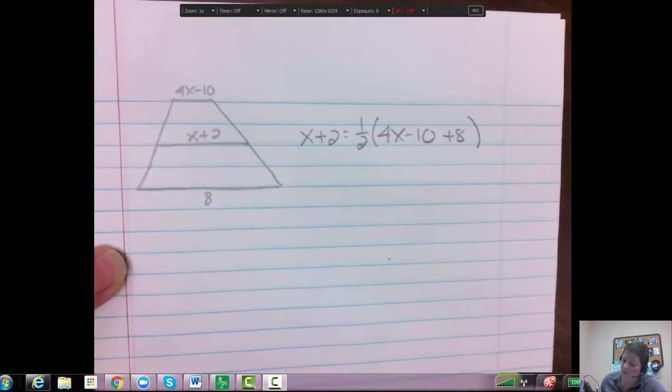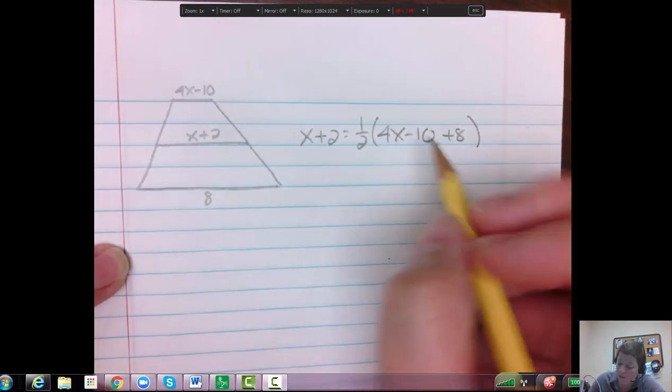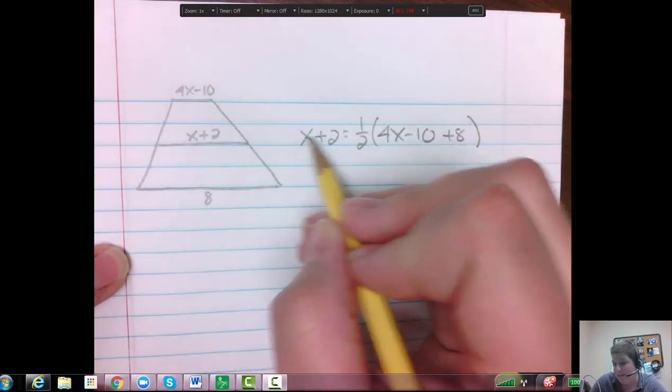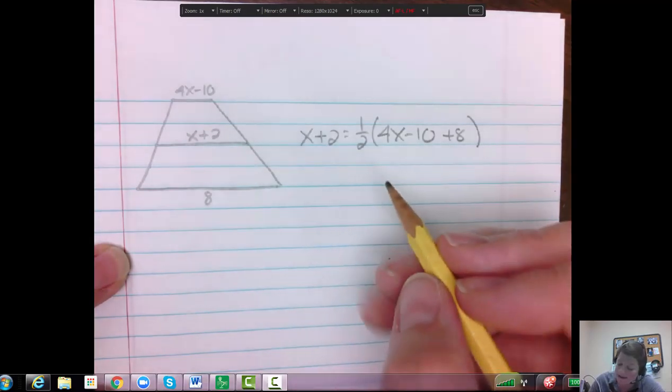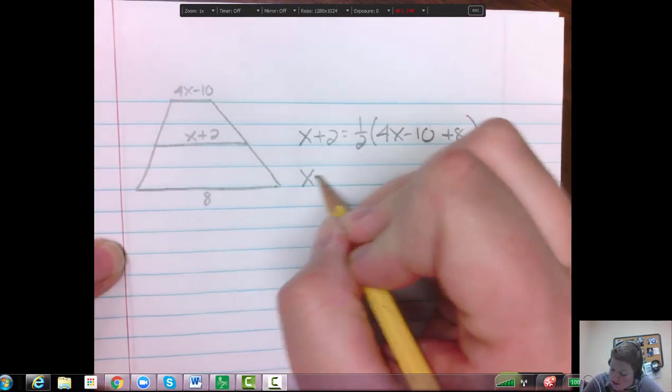Well, this whole thing is being times by one half, which you can do. You could distribute it or you can times the other side by 2, times everything by 2. Kind of depends. I'll just distribute it so that I don't confuse you too much. So we have x plus 2 equals one half times...